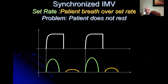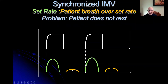Synchronized IMV (SIMV) is where the patient has a set rate but can breathe over that set rate at their own rate. The machine delivers a certain tidal volume at the set SIMV rate; however, the patient may also breathe at their own rate and tidal volume. The problem with SIMV is that spontaneous tidal volumes can vary and may be too small for adequate alveolar ventilation. Therefore, one generally adds pressure support to SIMV so the patient gets adequate tidal volume. Generally, SIMV is no longer commonly used in everyday critical care units.